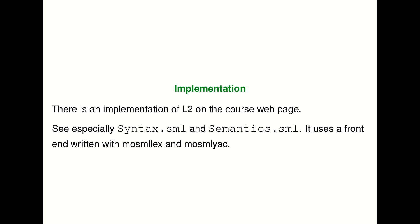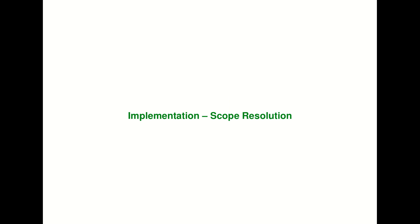Now that we've talked about how we represent recursion in the source language, along with its typing and reduction rules, the question is: how might we implement this? There is an implementation of L2 on the course web page — it's in Standard ML, and there are two files to look at: syntax.sml and semantics.sml. It uses a front end written with Moscow ML and Moscow ML YACC. There are a series of implementation choices we have to make, such as how we implement scope resolution.